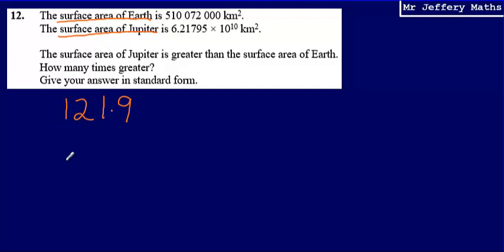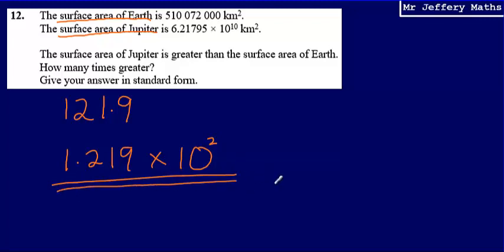So the way that we're going to do that is we're going to say that that is 1.219, so a number between 1 and 10 multiplied by 10 to the power of—well, what would we need to multiply 1.219 by to reach 121.9? We'd have to multiply it by 100, or we could also say that that is multiplied by 10 squared. So our final answer here is going to be 1.219 multiplied by 10 squared.